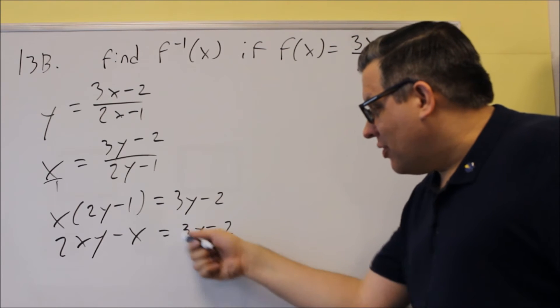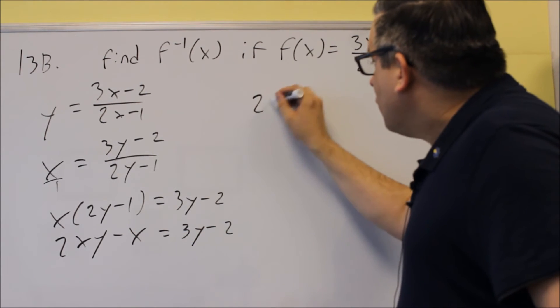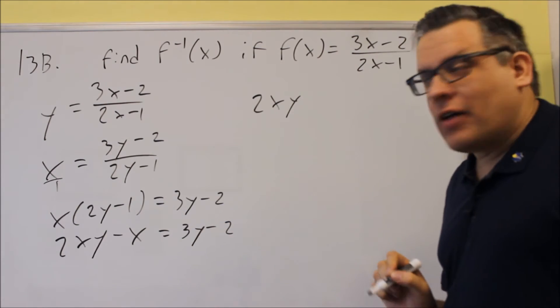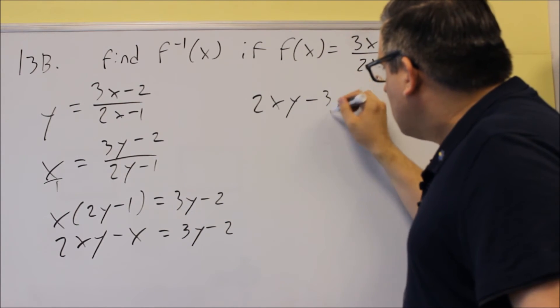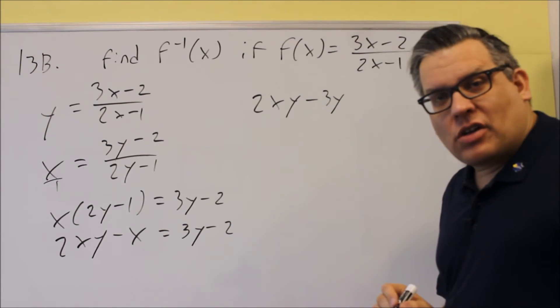We want to move this term, this y, over to the other side. So I have 2xy. I'm going to subtract this 3y and move it over to the left. So I get 2xy minus 3y. Just moving that over to the left-hand side.